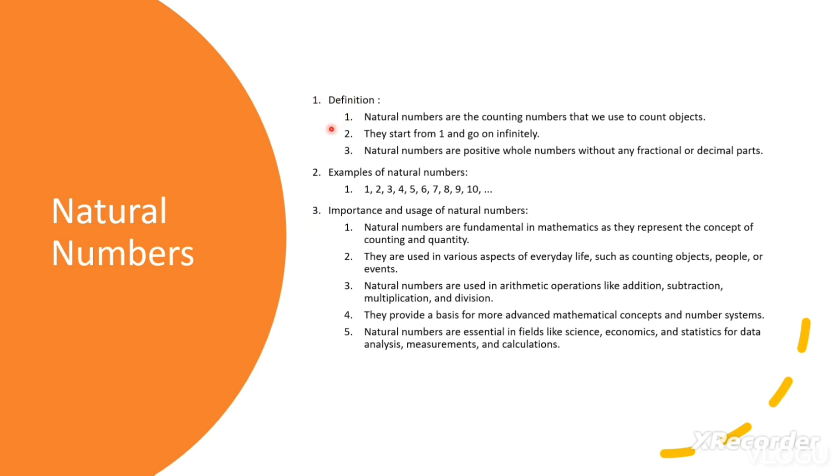Definition of natural numbers. Natural numbers are the counting numbers that we use to count objects. They start from 1 and go infinitely. Natural numbers are positive whole numbers without any fractional or decimal parts.